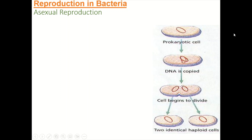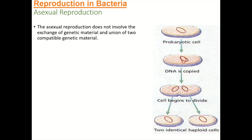There are two types of reproduction in bacteria. Number one is asexual reproduction and number two is sexual reproduction. Asexual reproduction does not involve the exchange of genetic material and union of two compatible genetic materials.